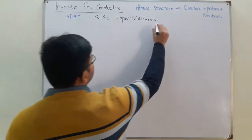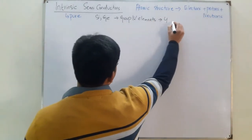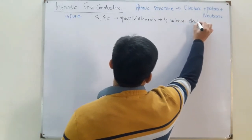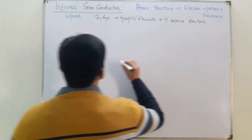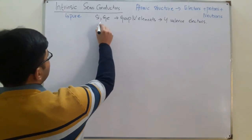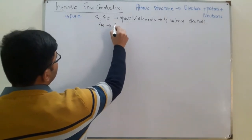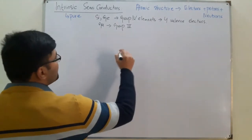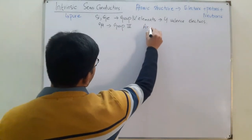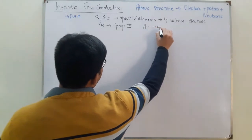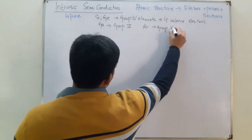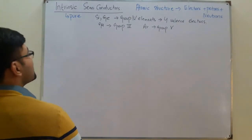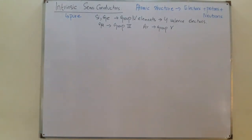Being Group 4 elements means they have 4 electrons in their outermost shell — 4 valence electrons. Gallium is a Group 3 element, so it has 3 valence electrons. And arsenic is a Group 5 element, so it has 5 electrons in its outermost shell.